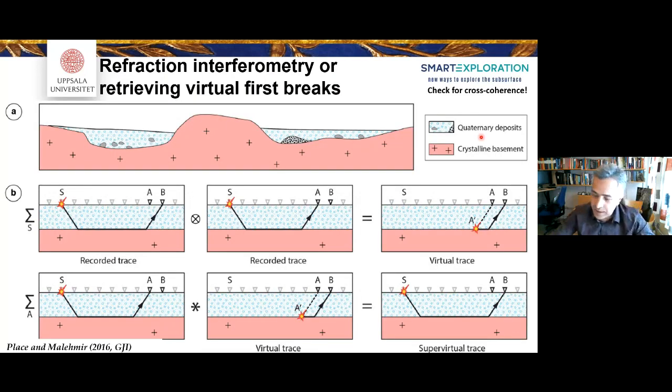And then we said, OK, a few years later, I had a postdoc in place. I said, OK, can we come up with something that we can improve on the quality of the data? And especially our data have trouble with the statics and essentially to resolve the overburden, heterogeneity and thickness. And we said, OK, interferometry was very popular. Then we said, OK, why not we use interferometry to retrieve first breaks, essentially get virtual first break at places that are very noisy.